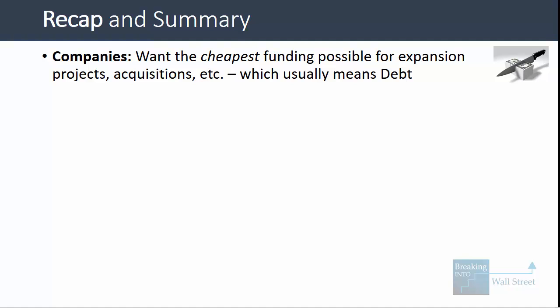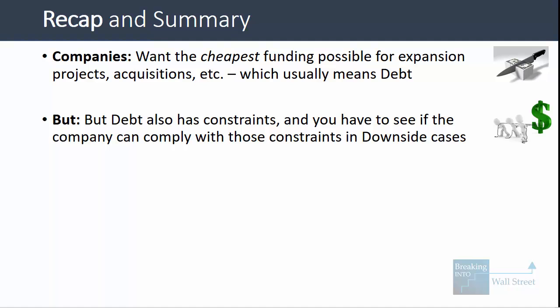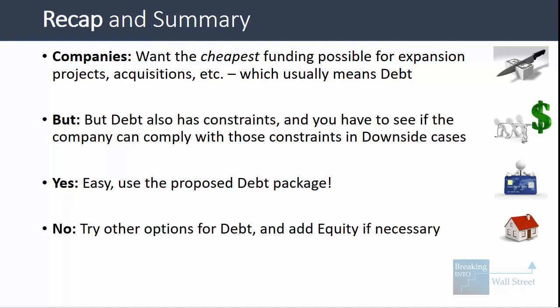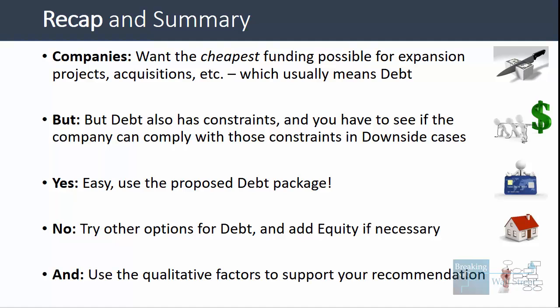To recap: companies generally want the cheapest funding possible for expansion projects, acquisitions, and other initiatives, and usually that means debt because interest paid on debt is tax deductible, interest rates are lower, and the after-tax cost of debt is lower than equity. But debt has constraints, so you have to see if the company can comply with those constraints especially in the downside cases. If it can, use the proposed debt package; if not, try other structures, and if none work, start adding equity — more expensive, but the company can at least comply with its covenants. Use qualitative factors at the end to support your recommendation.